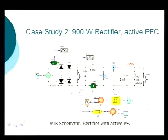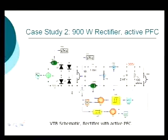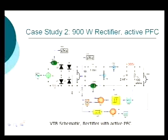Then you sense the input current, subtract the reference, and get a current error. Here you place a high-bandwidth current controller — I've used a hysteresis current controller since that's what's available in VTB. But you could use peak current mode control, average current mode control, or something like one-cycle control. The output of the current controller is directly the command for the switches, which could be a PWM unit.